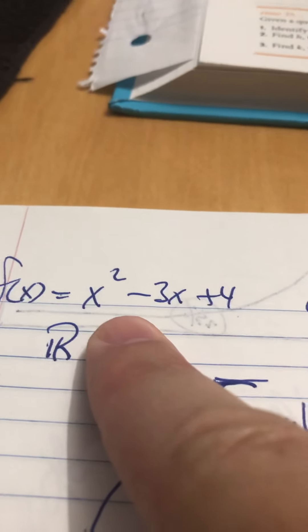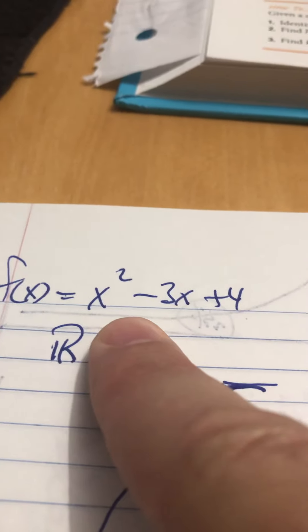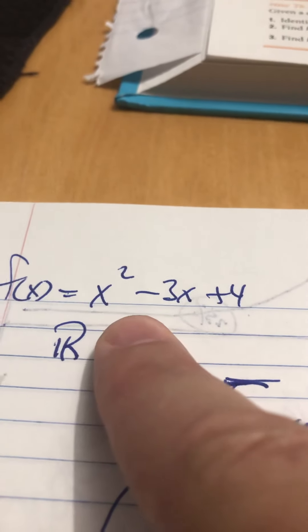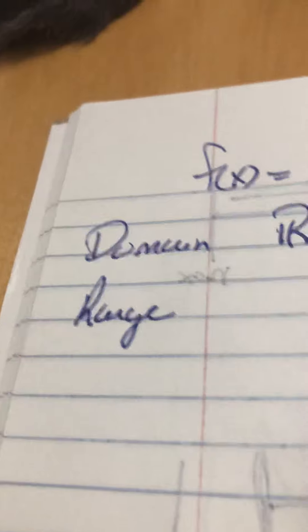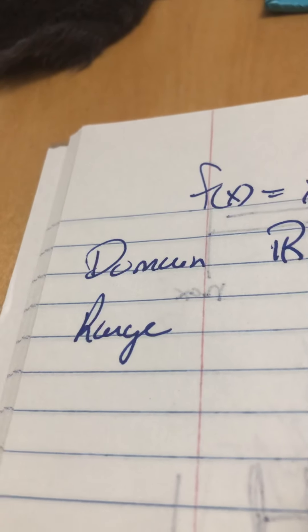So, in the last video, we had generated a parabola, quadratic, that was in this form, or looked like this in standard form, and looked like this in vertex form. And we wanted to talk briefly about domain and range. And it's not too bad.